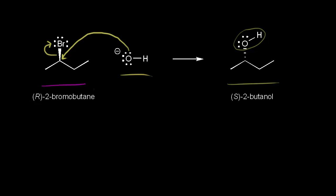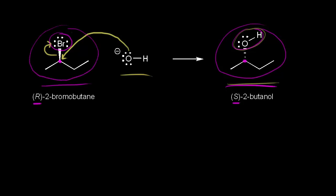If we look at our substrate, we know that this carbon is a chiral center, and our bromine is on a wedge, coming out at us in space. So the configuration at this chiral center is R. When we look at our product, we have our OH going away from us in space, and the configuration at this chiral center is S. So the stereochemistry of our product is determined by the stereochemistry of our reactant, and that's because of our SN2 mechanism. We observe inversion of configuration — going from an R configuration to an S configuration.